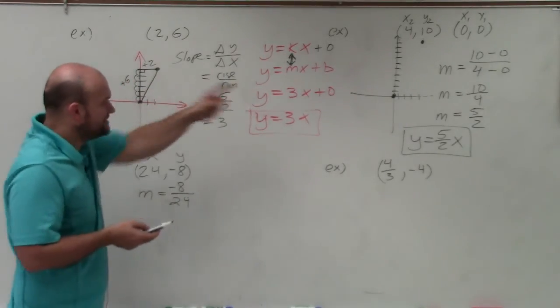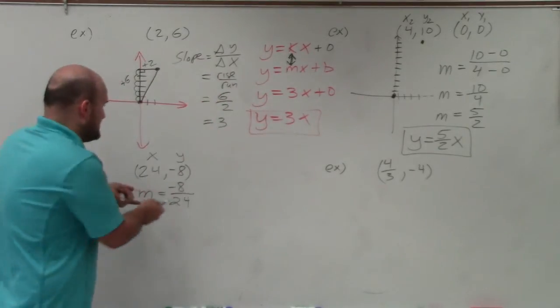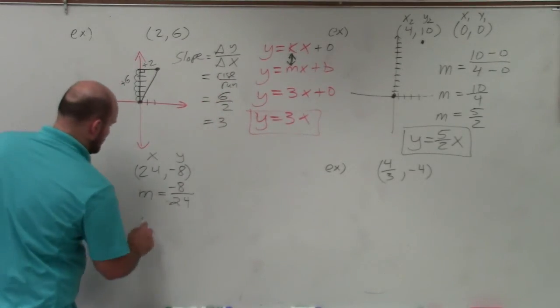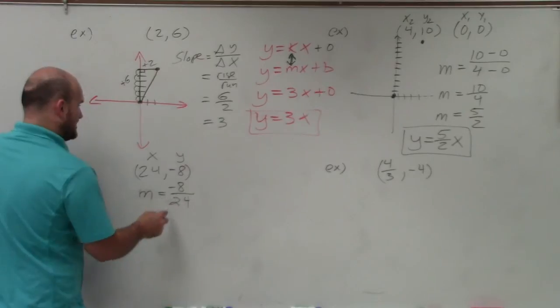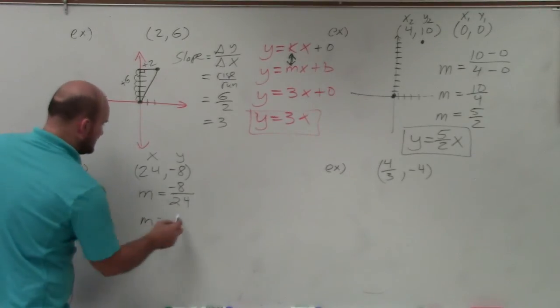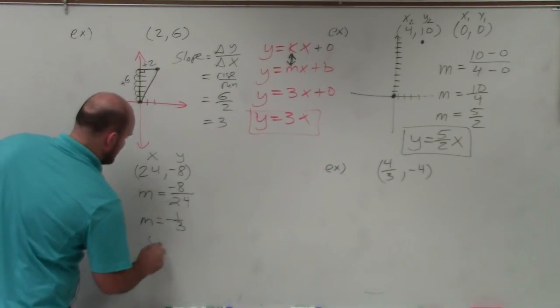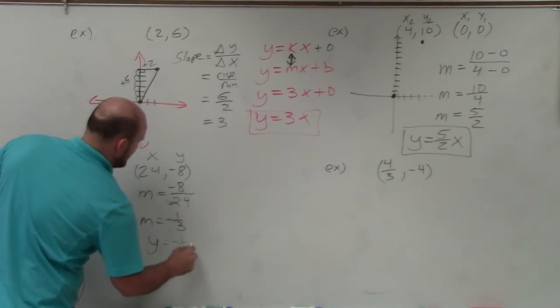And you can go through these two, but these are longer methods. You can basically just say y over x. That's going to tell you the slope. So I look at this. I can reduce that. Let's see, 8 divides into there. So that's going to be a negative 1 3rd. So y equals negative 1 3rd x.